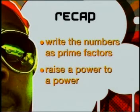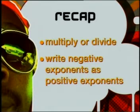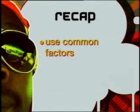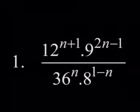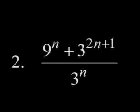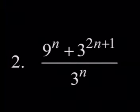That brings us to the end of this lesson. To simplify exponential expressions you must: write numbers as prime factors, raise a power to a power, multiply or divide, write negative exponents as positive exponents, and use common factors. Here's the task: simplify number 1 — 12 to the power n plus 1, multiplied by 9 to the power 2n minus 1, all divided by 36 to the power n times 8 to the power 1 minus n. Number 2 — 9 to the power n plus 3 to the power 2n plus 1, all divided by 3 to the power n.